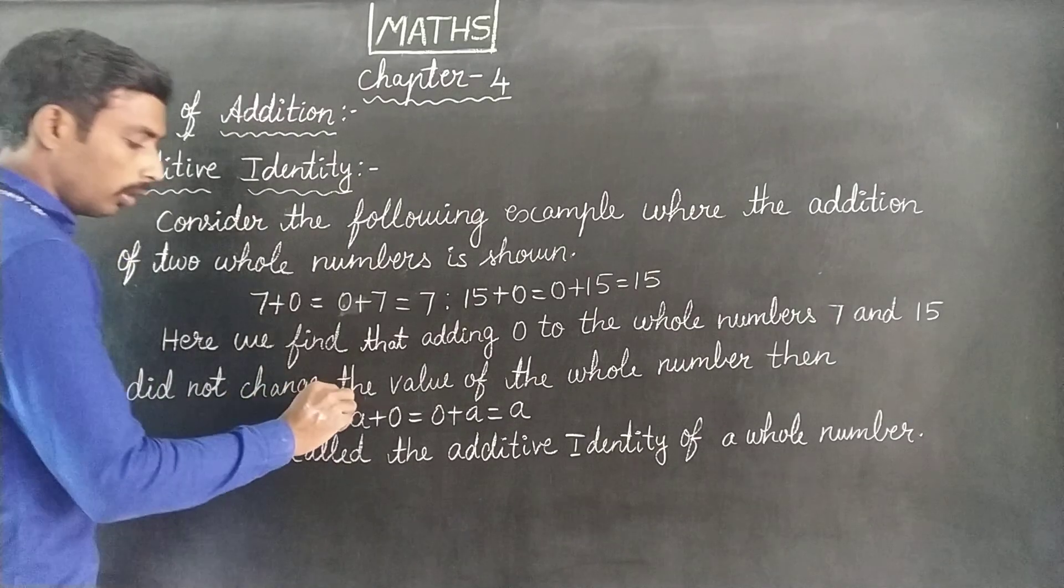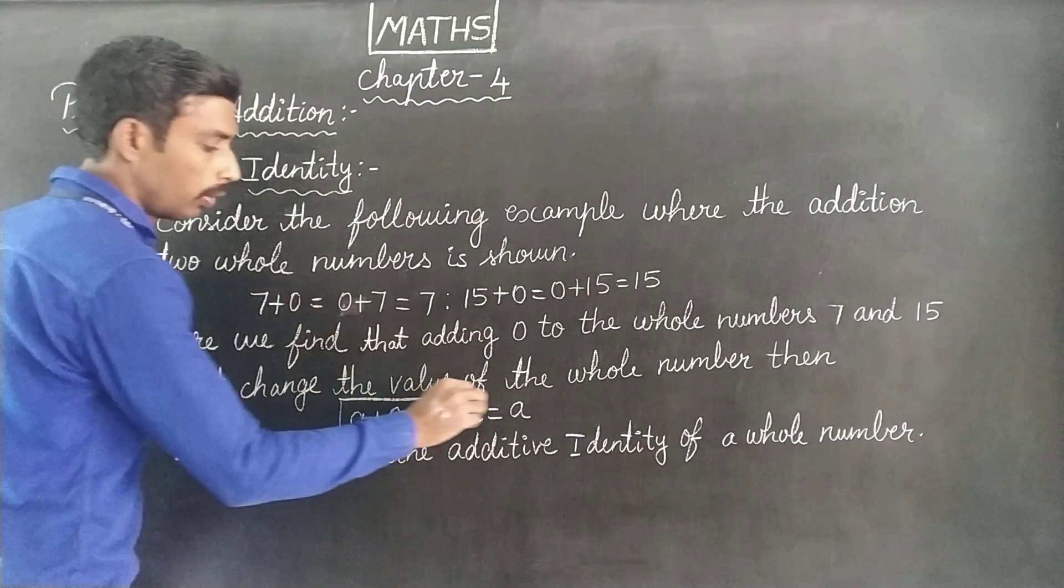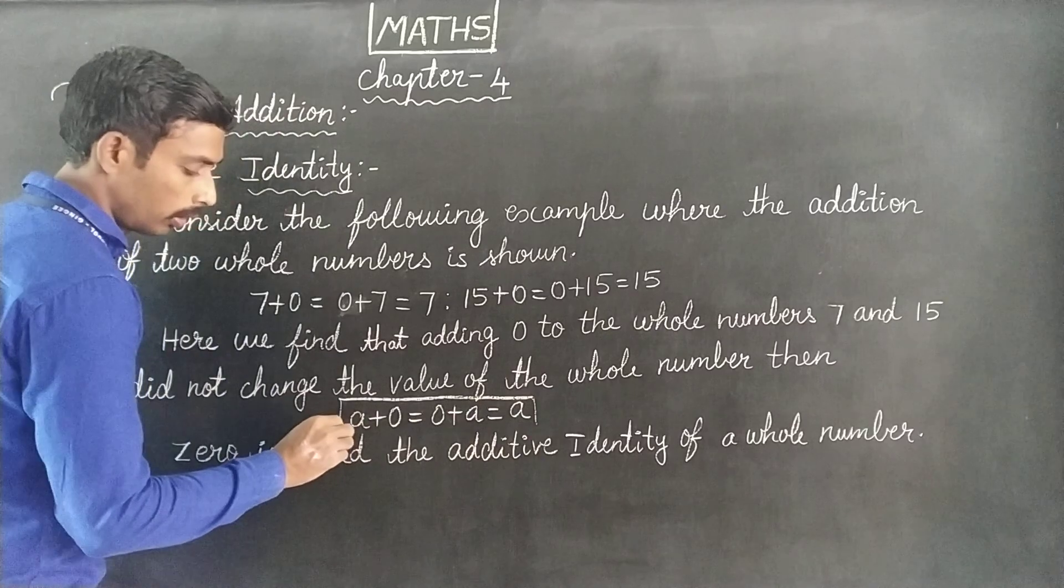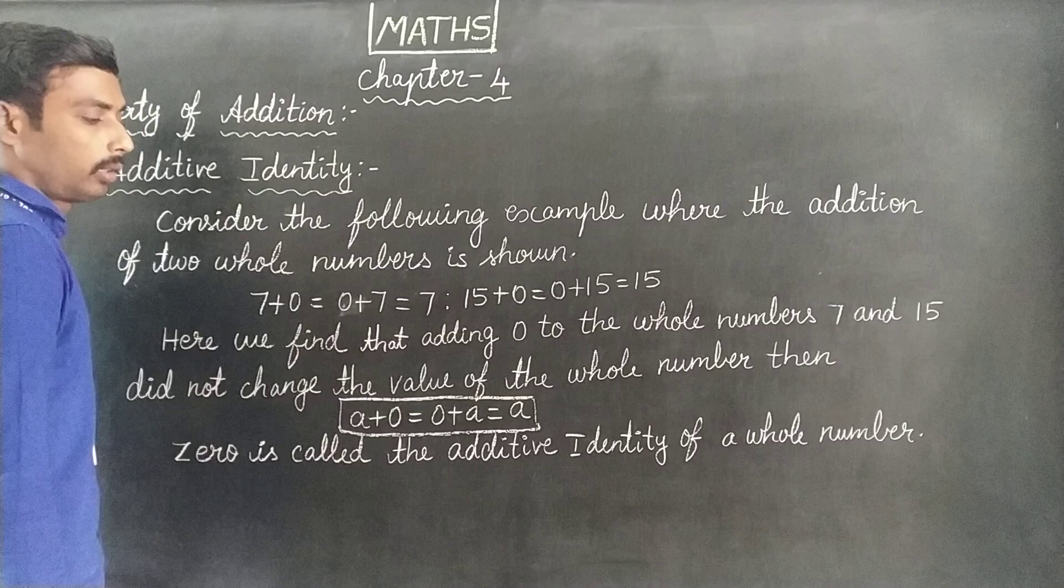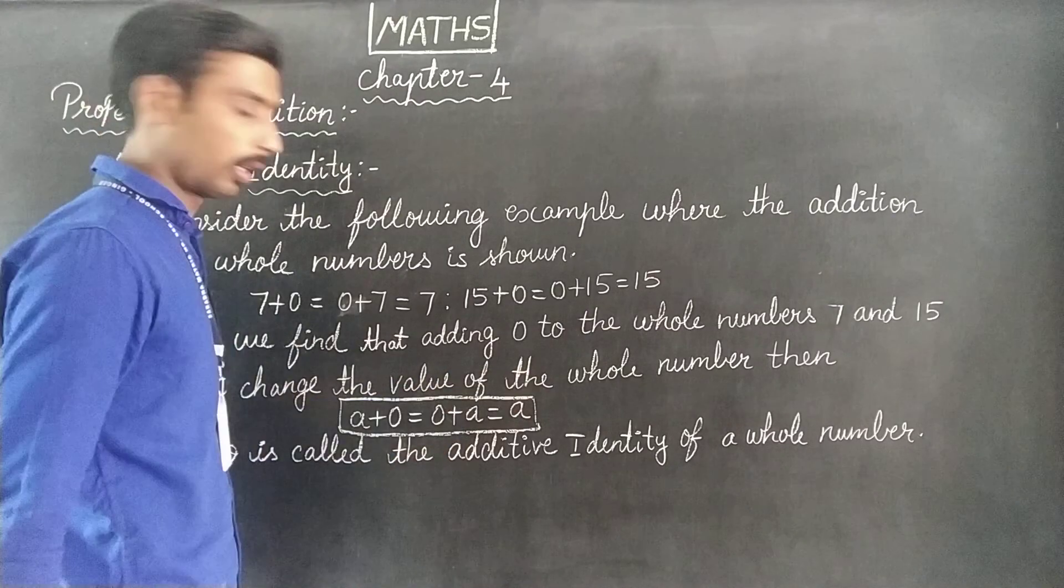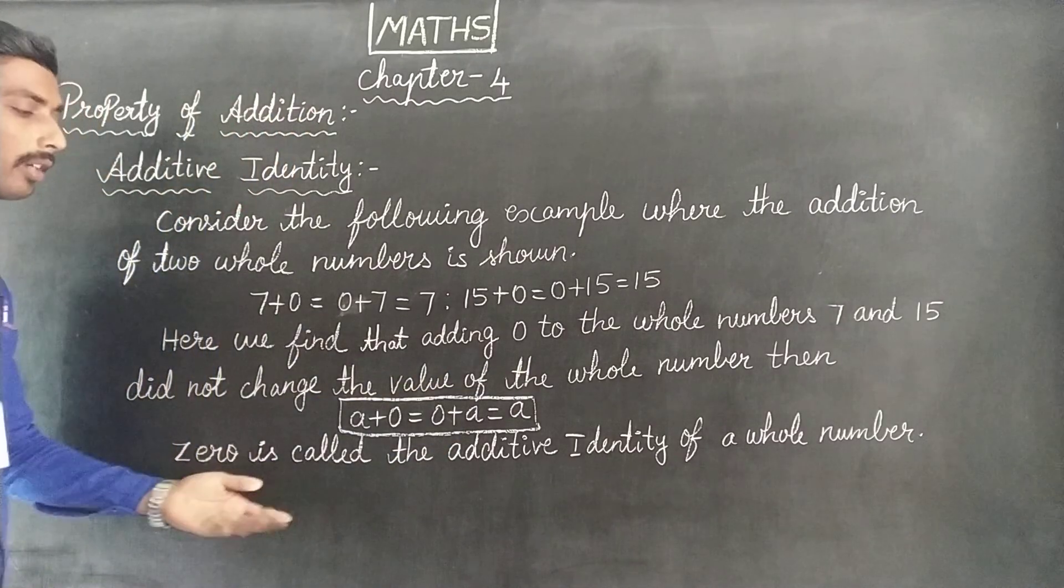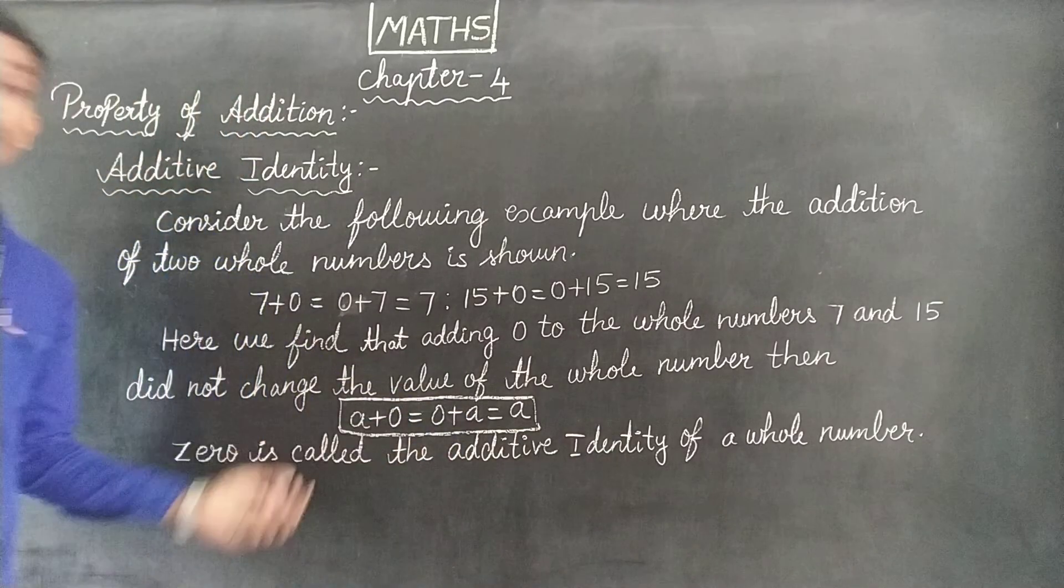That's the meaning of this. So we can follow the formula: A plus 0 equals 0 plus A equals the whole number. So 0 is called the additive identity.